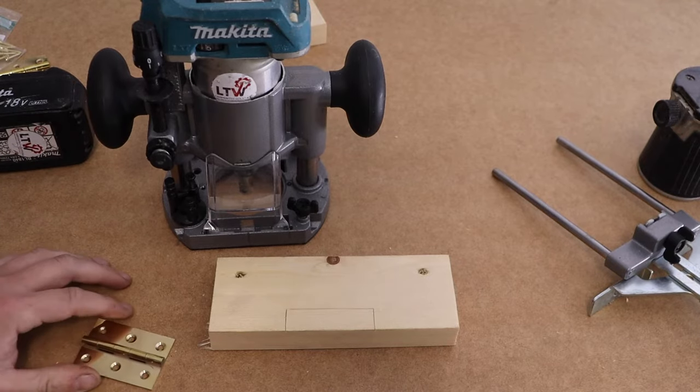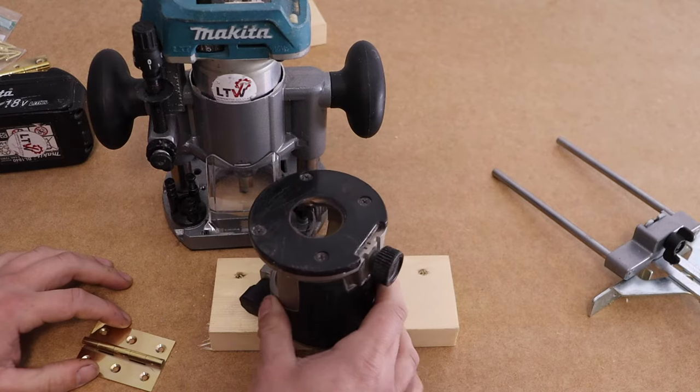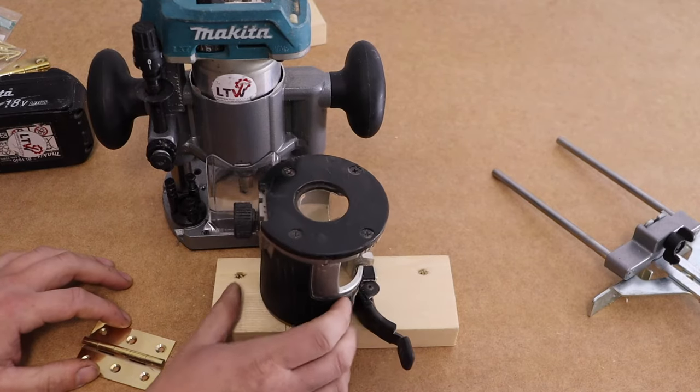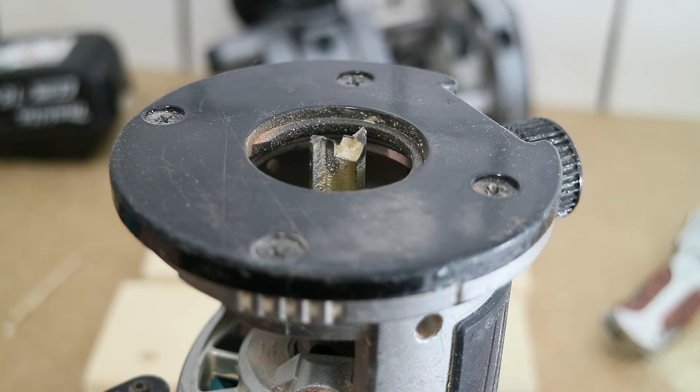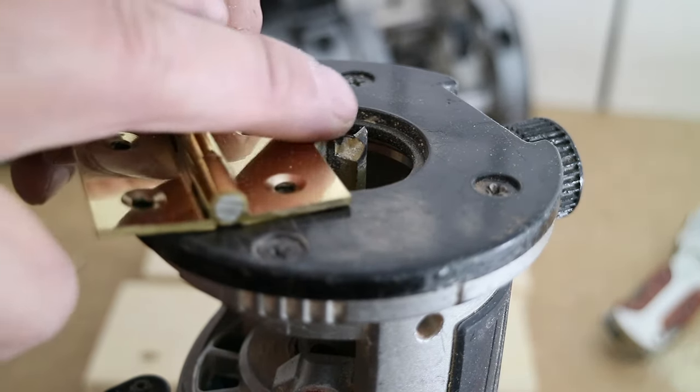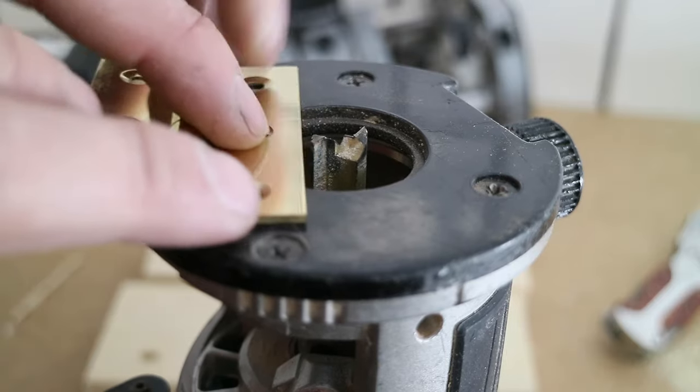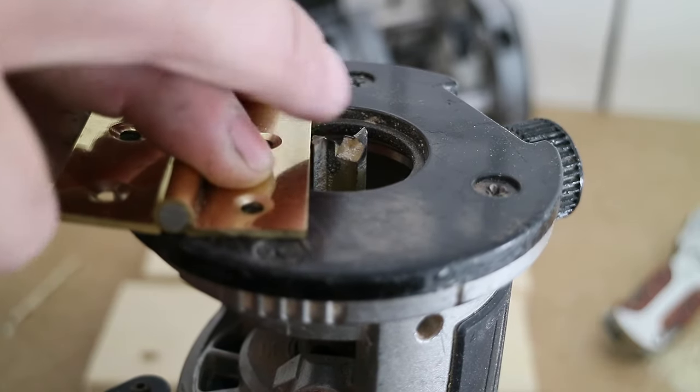Now if you're using this sort of base here, what you want to do is actually lay your hinge on there and then you can set the thickness of the leaf to your router cutter, and I'll do a little video up here just showing how to do that.